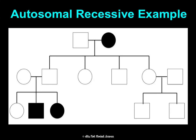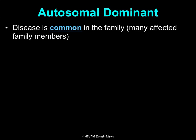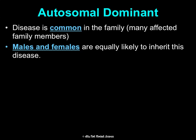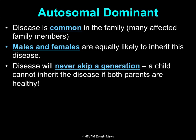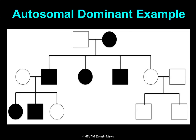Here is an example of autosomal recessive — you can see it's very rare and skips generations. For autosomal dominant, the disease is common in the family with many affected members, males and females are equally likely, and it can't skip generations — a child can't get it if both parents are healthy. Examples are achondroplasia, Huntington's disease, and neurofibromatosis. In the example, because one daughter didn't get it, she must be homozygous recessive, and since she married a man who is also homozygous recessive, none of their children have it.